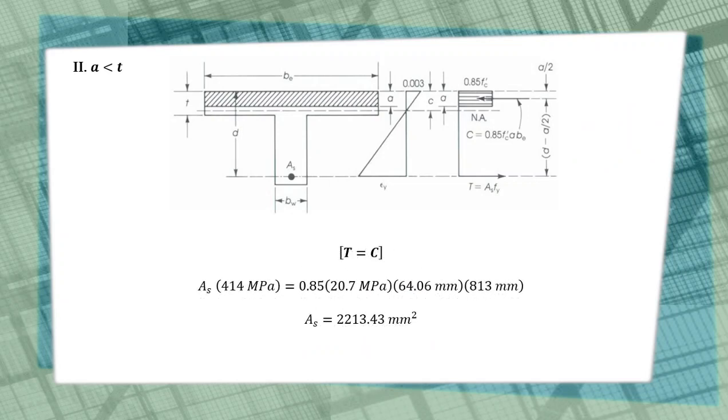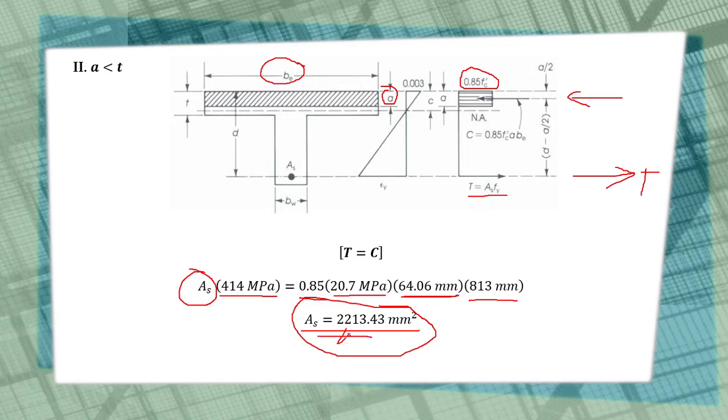Next, we find the area of steel by equating tension T to compression C. T = As × fy = C = 0.85 f'c × bf × a. So As × 414 MPa = 0.85 × 20.7 × 64.06 × 813. By calculator, we get the area of steel As = 2,213.43 mm². This is the required area from the problem.